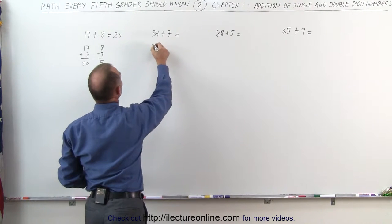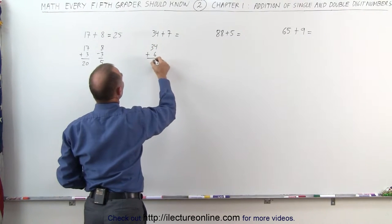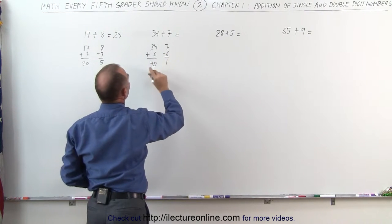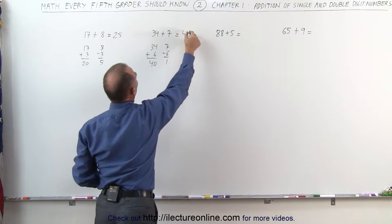The way we did that is: 34 plus 6 gives me 40, subtract the 6 from 7 to get 1, and 40 plus 1 is 41.